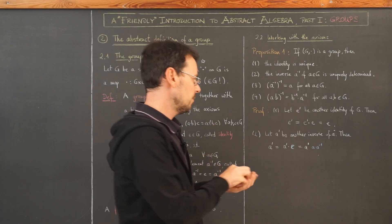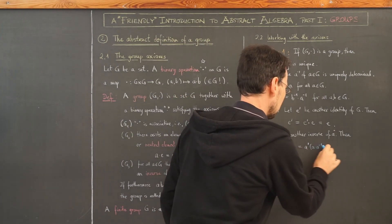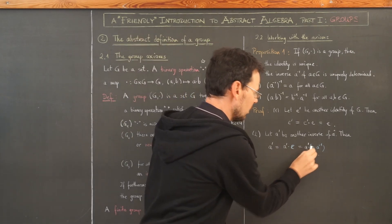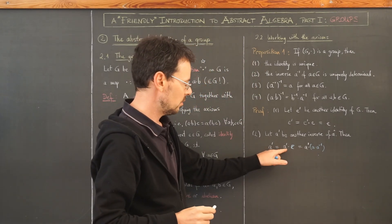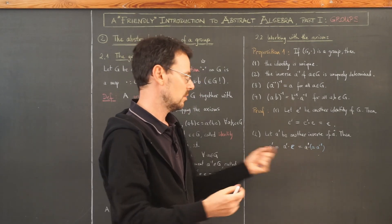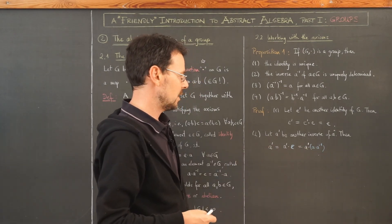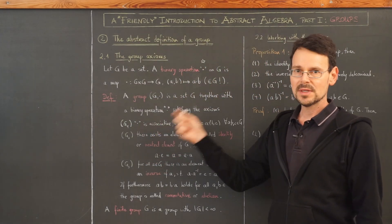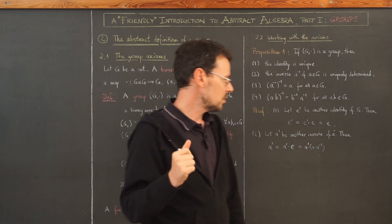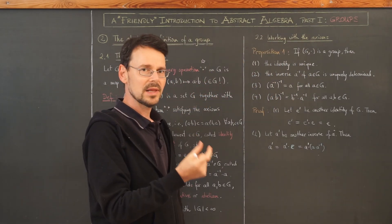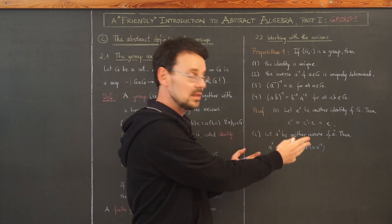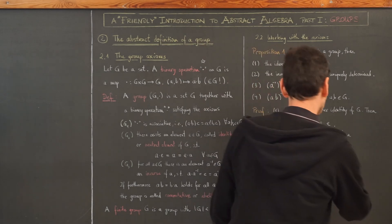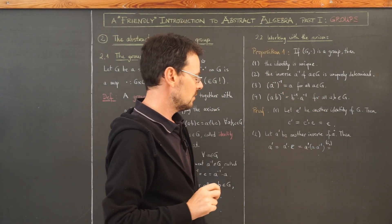Now we have to put parentheses here, because we have a double composition: we compose a' with the composition (a·a⁻¹). Now we actually need associativity. This is what I meant when I said associativity will be needed in subtle places in proofs — it's easy to overlook, but very important. This uses axiom G1, associativity: we can now move the parentheses.